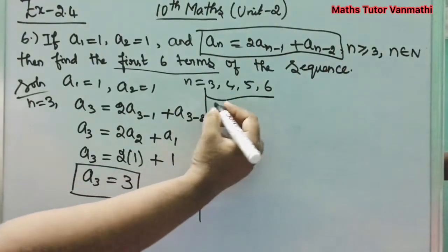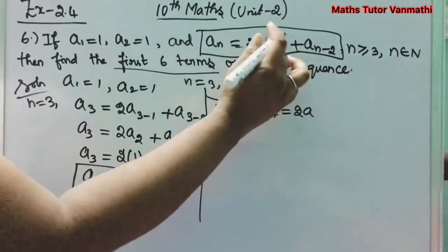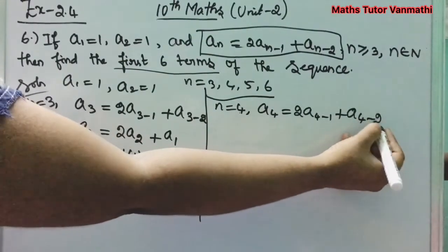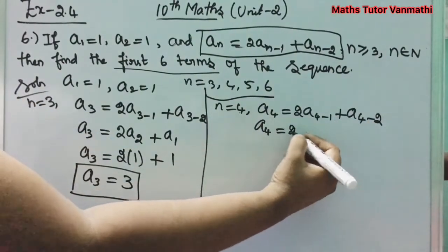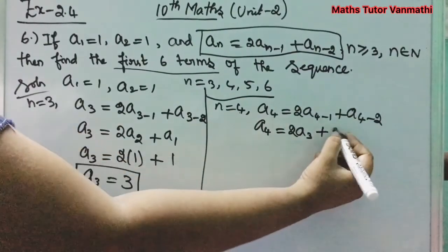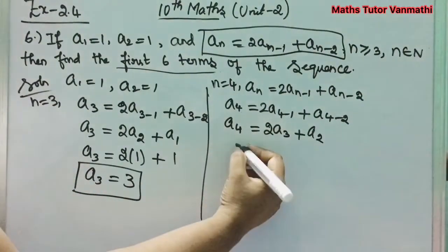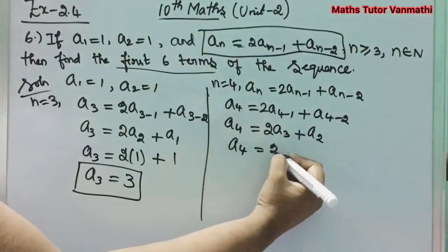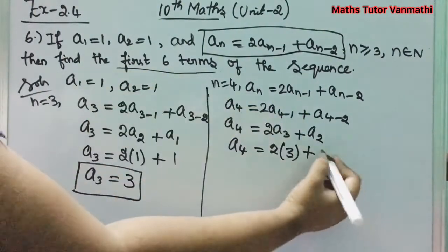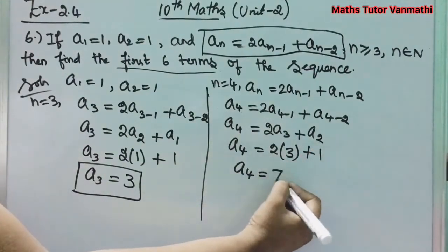For n = 4: a_4 = 2a_(4-1) + a_(4-2) = 2a_3 + a_2 = 2×3 + 1 = 6 + 1 = 7. So a_4 = 7.